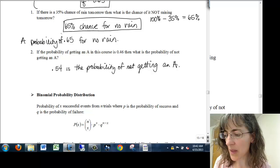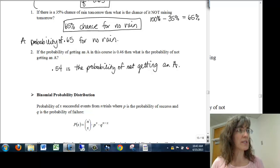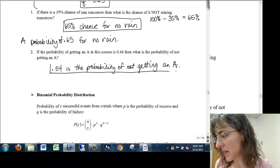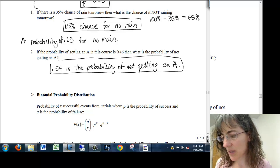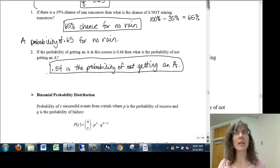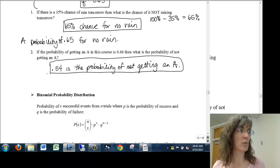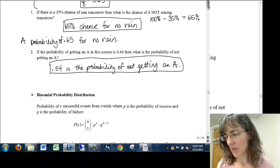What if I asked you what is the likelihood that you won't get an A? Or what are the chances that you won't get an A? How would you state it then? Point five four is the chance of not getting an A?